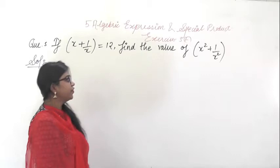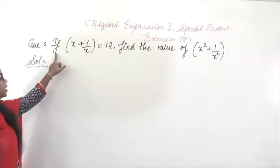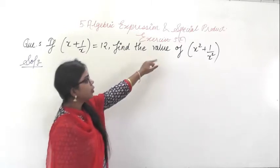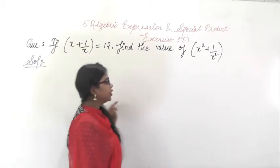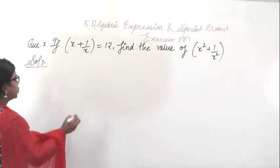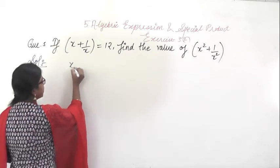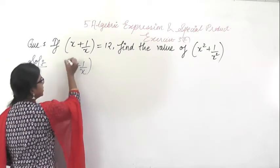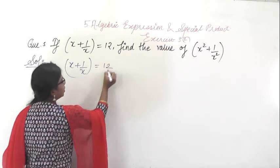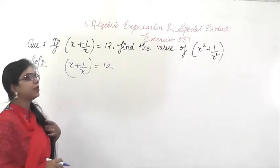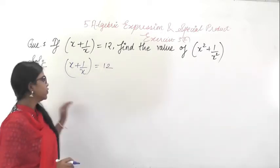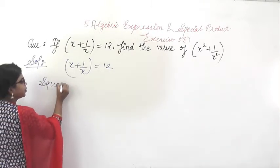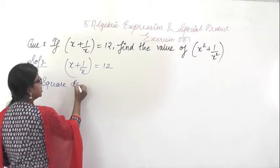This is question number 5. In this question it is given: if x + 1/x = 12, find the value of x² + 1/x². The condition given is x + 1/x = 12 and you have to find the value of x² + 1/x². So for this, square both sides.